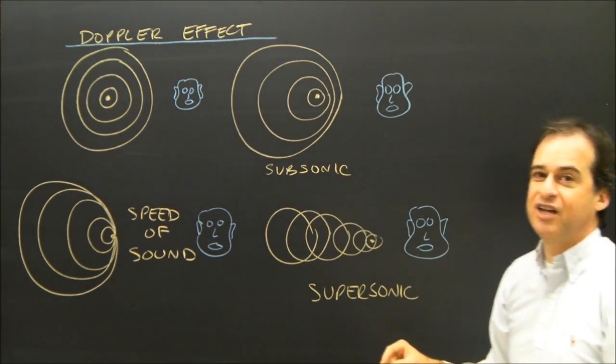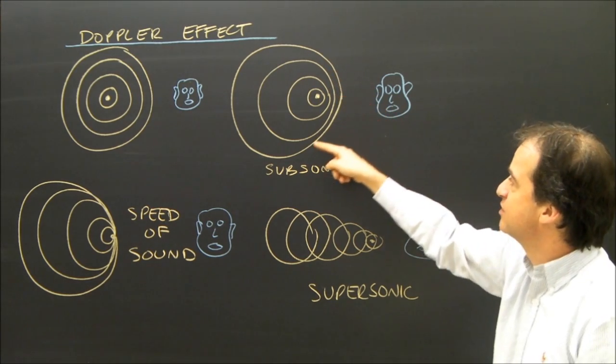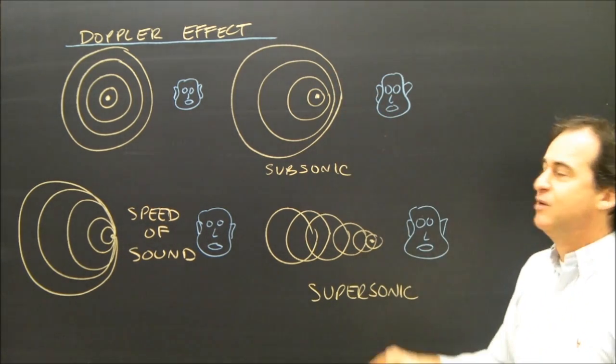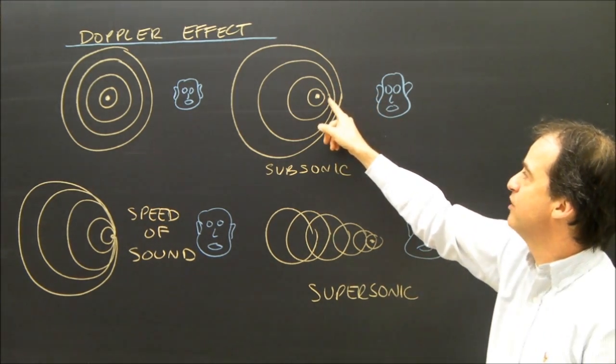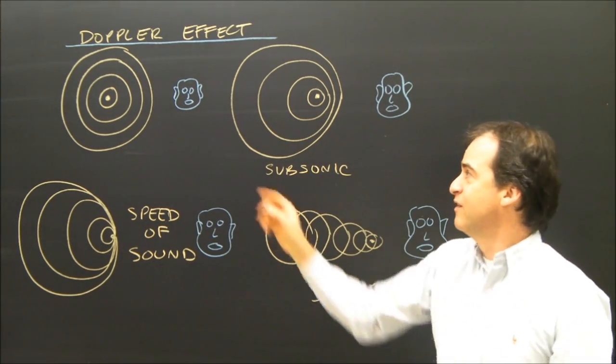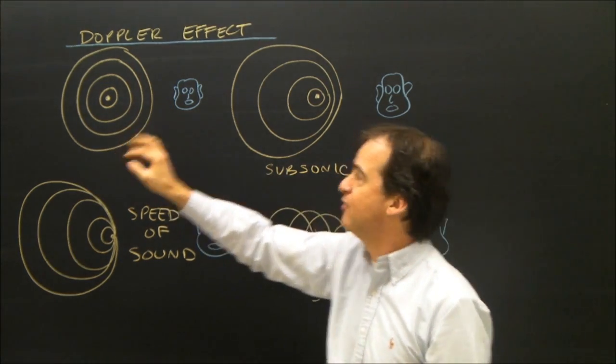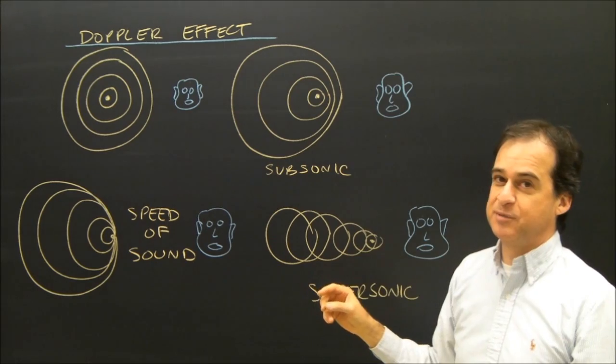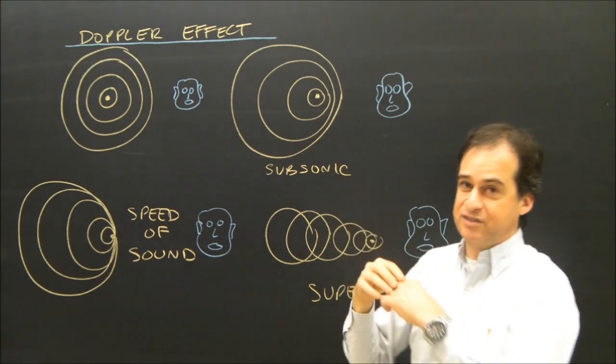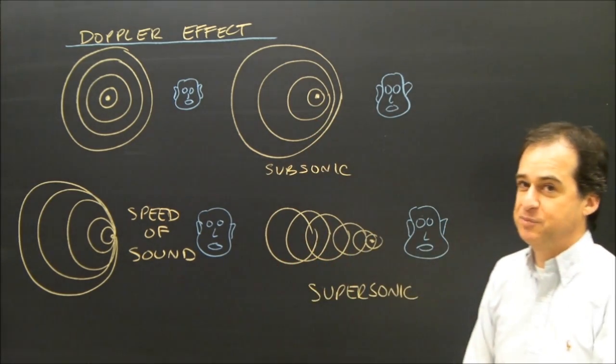So as the sound is leaving the siren, the sound waves on this side are starting to bunch up. Which means this person hears more of these waves pass in a second than they heard when they were over here. Even though these sound waves are traveling the same speed, once the siren sounds leave, they travel the same speed in air.